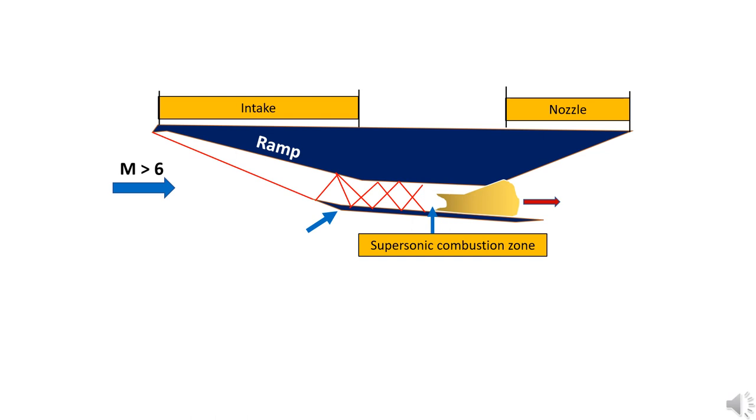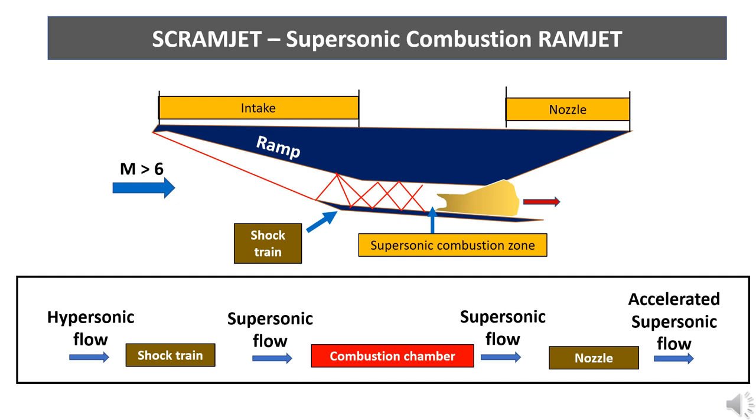The scramjet works by taking air at hypersonic speeds into the intake. Because of the intake and the intake ramps design, oblique shocks will be formed from the nose and due to reflections from the ramp surface, series of shocks which are called shock trains are formed. When the air passes through these shock trains, the velocity or Mach number of the air reduces while the temperature and pressure increases.